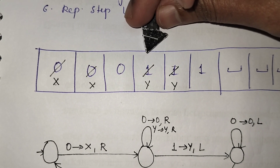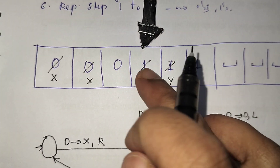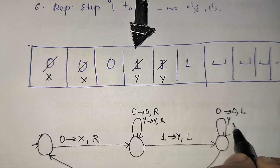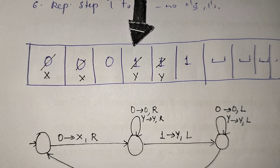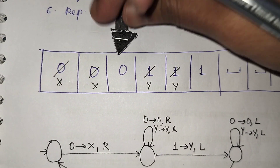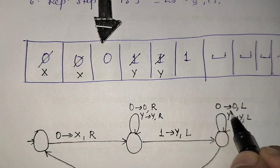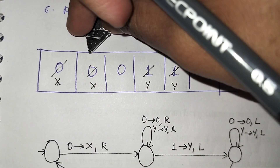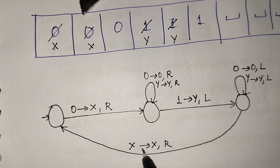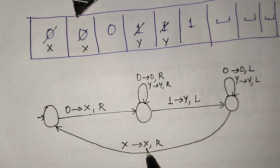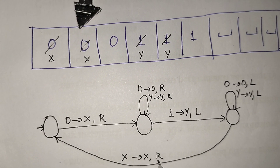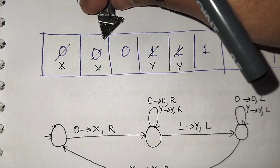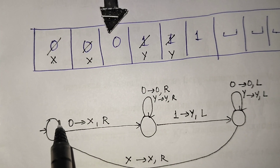The pointer is pointing to the left. In the left I can see 0 as well as y. Whenever I see a y, don't do anything — keep moving towards left. I see a 0 — whenever I see a 0 keep as it is, move towards left. I need to go till the last updated 0. Whenever I see x, keep x as it is and just move the pointer towards right. Then this process repeats.